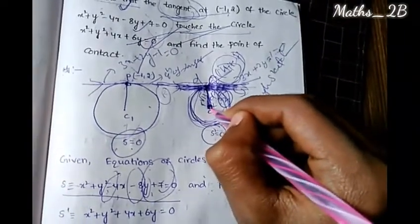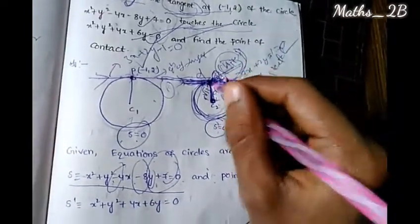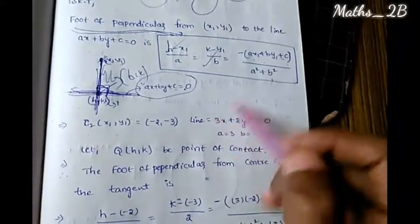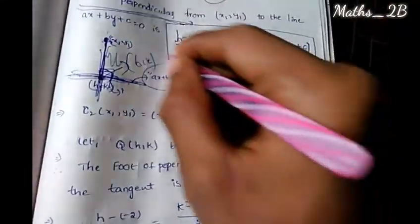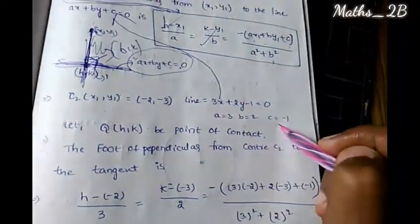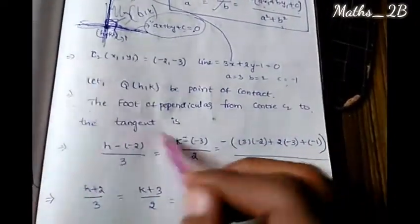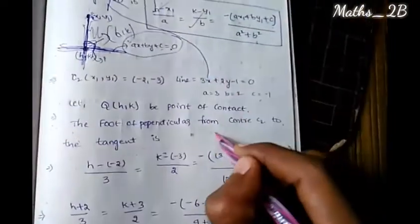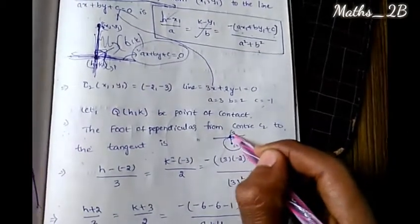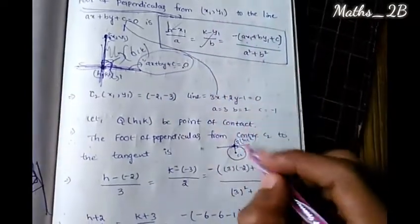The center C2 is minus 2, minus 3. The line is 3x plus 2y minus 1 equals 0. Comparing to general form ax plus by plus c equals 0: a equals 3, b equals 2, c equals minus 1. The point of contact is Q of h, k, which is the foot of perpendicular from center C2 to the tangent.